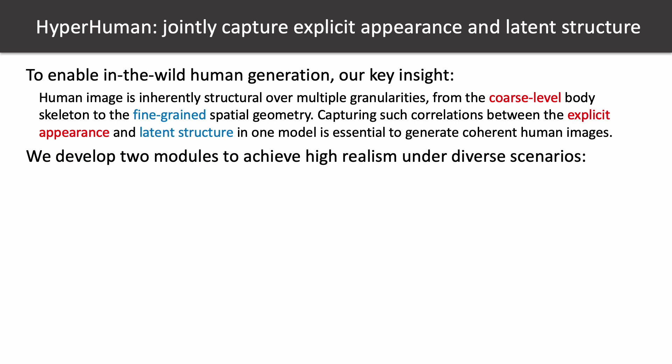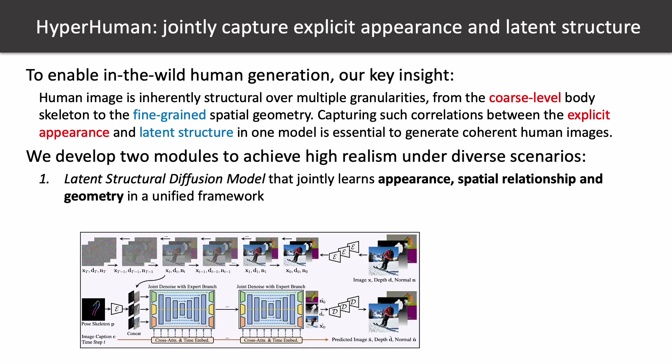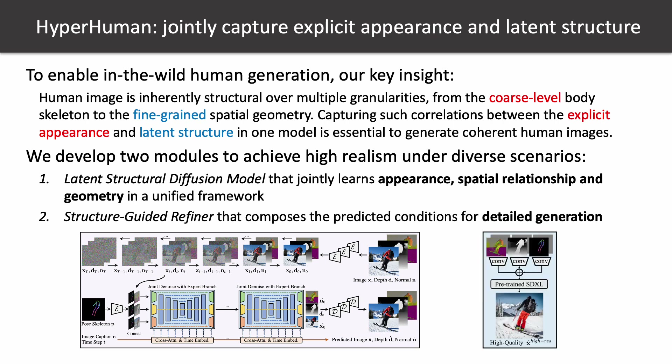Therefore, capturing such correlations between the explicit appearance and latent structure in one model is essential to generate coherent human images. Motivated by this, we developed two modules to achieve high realism under diverse scenarios: a latent structural diffusion model that jointly learns appearance, spatial relationship, and geometry in a unified framework, and a structural guided refiner that composes the predicted conditions for detailed generation.